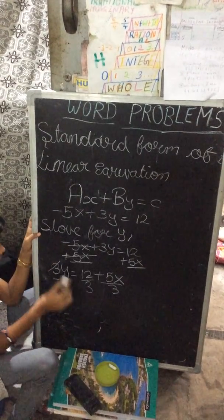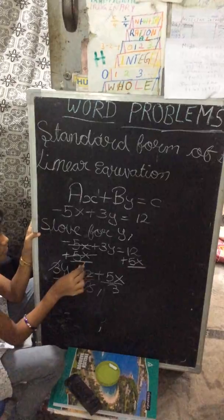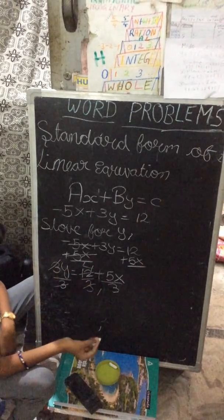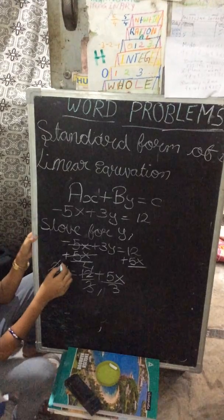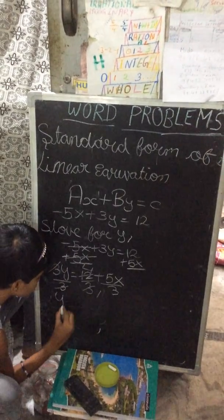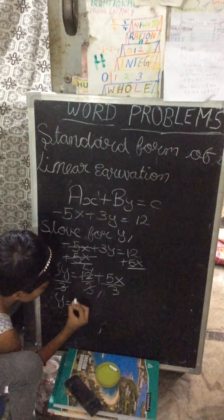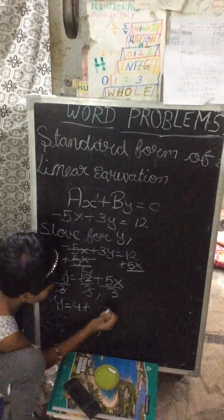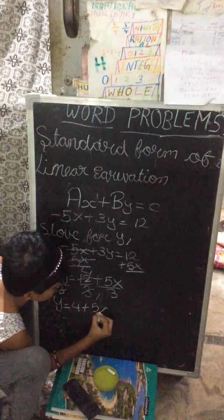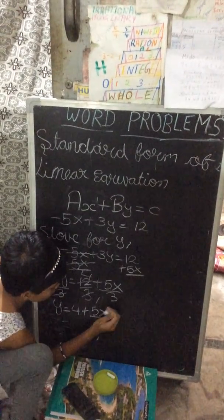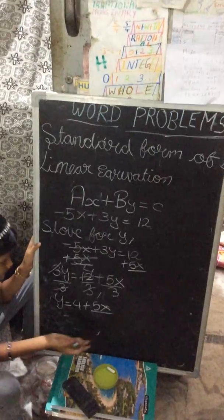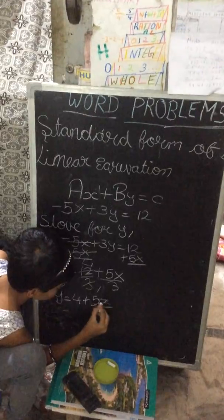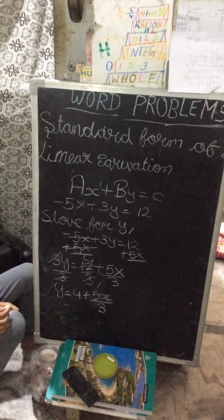3 divided by 3 gets cancelled. Since these two can't divide evenly, we leave them as it is. Since we isolated y, we write y equals 4 plus 5x over 3. Thank you.